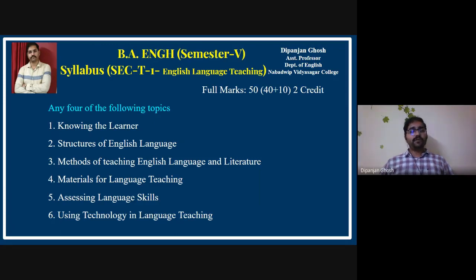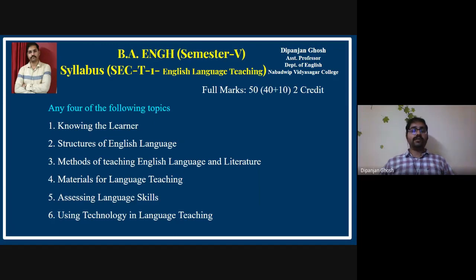The fourth topic is Materials for Language Teaching — both classroom materials and other teaching aids. The fifth is Assessing Language Skills, covering how to assess learners' language skills and teach English properly. The sixth and final topic is Using Technology in Language Teaching — how technology such as language laboratories, CDs, and other tools can help learners improve their language.